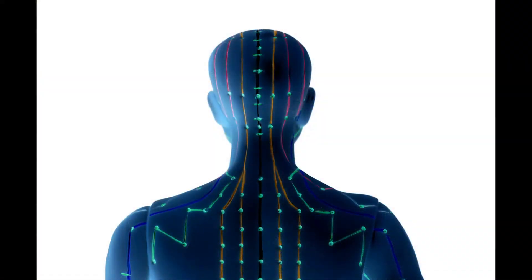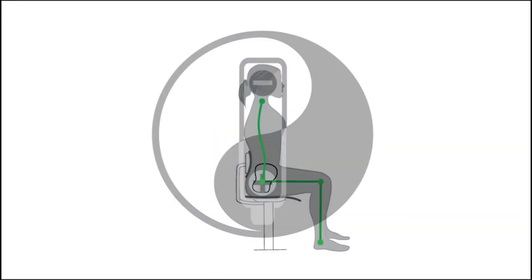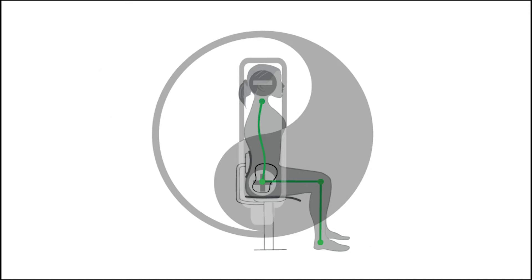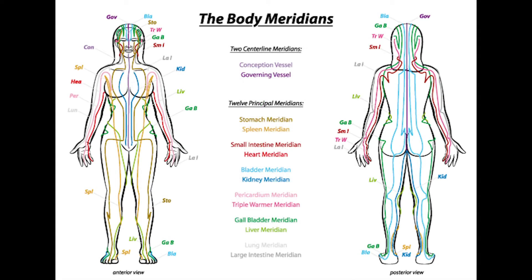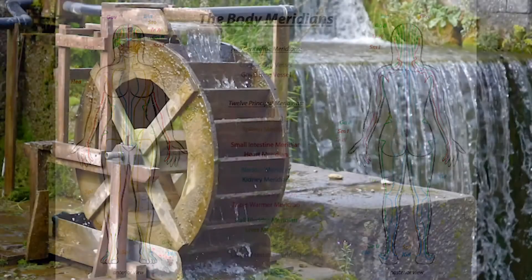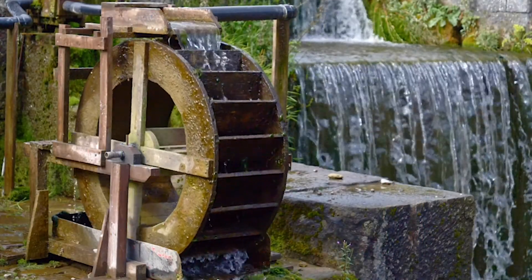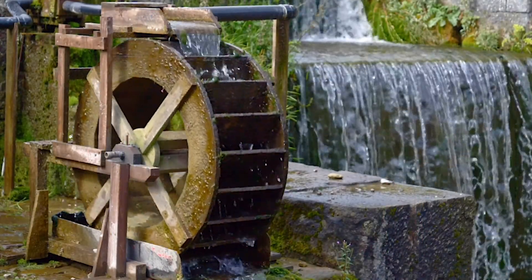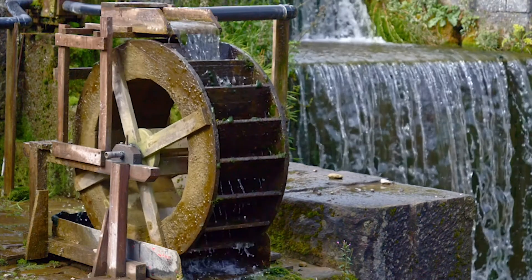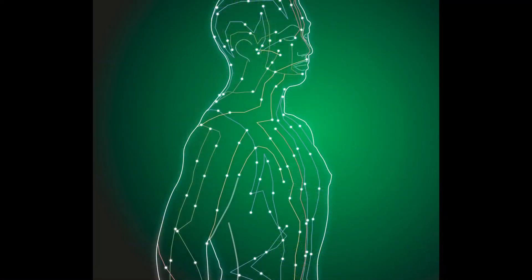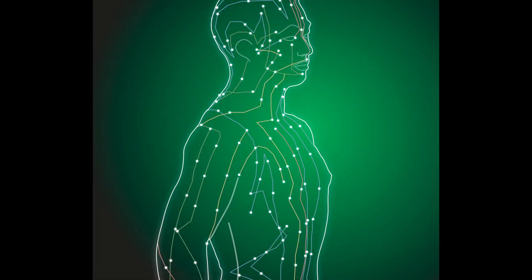This is how our qi channels work. Our bodies create energy in the elixir fields, also known as dan tien, and send it throughout the various energy channels of the body, with acupuncture points serving as the water pump used in the previous illustration. This is how the energy, or the qi of the body, continues to flow.